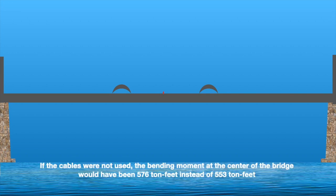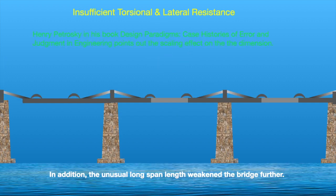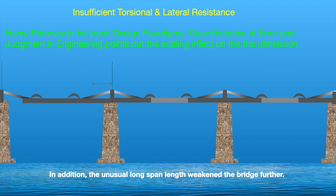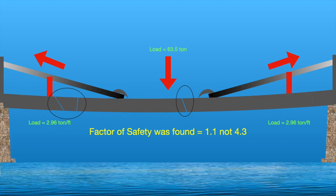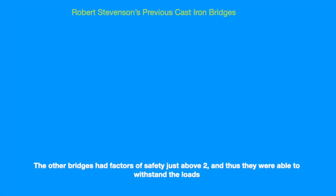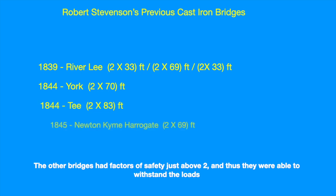If the cables were not used, the bending moment at the center of the bridge would have been 576 ton-feet instead of 553 ton-feet — a negligible difference. In addition, the unusually long span length weakened the bridge further. The actual factor of safety was not 4.3 but just 1.1. The other bridges had a factor of safety of just about 2, and thus they were able to withstand the loads.